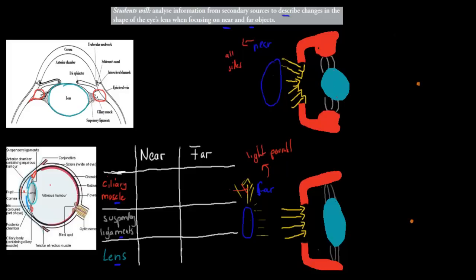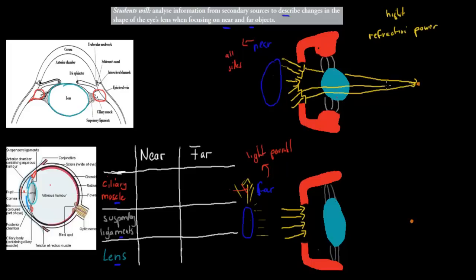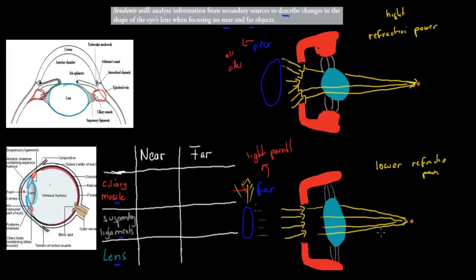For nearby objects, the lens needs high refractive power — the ability to bend light significantly — because the diverging rays need to be bent a lot to converge onto the retina. For far objects, since light is already parallel, only a slight bend is needed, so the lens requires lower refractive power. A round lens shape gives higher refractive power; a flat lens shape gives lower refractive power.